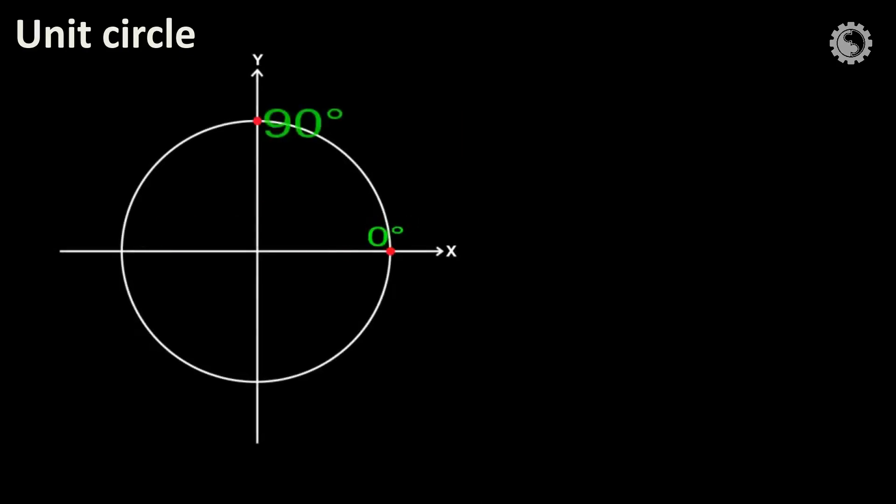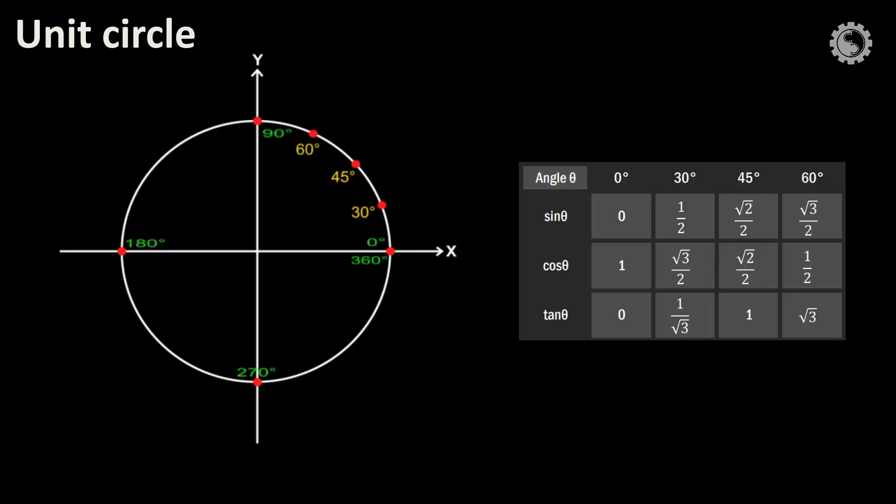In another part of the unit circle, we see some important angles. That's 30 degrees, 45 degrees, and 60 degrees. Note, you should remember sine, cosine, and tangent for the angles 30 degrees, 45 degrees, and 60 degrees. These are the values you should remember. But how to remember them?